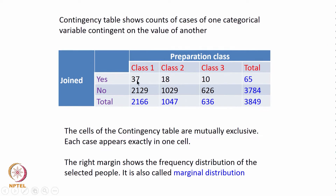The 65 is divided into 37, 18, and 10, and the 2166 gets distributed to 2129 and 37. Out of 2166 who went to class 1, 2129 did not join the program while 37 did. The cells of the contingency table are mutually exclusive and each case appears exactly in one cell.